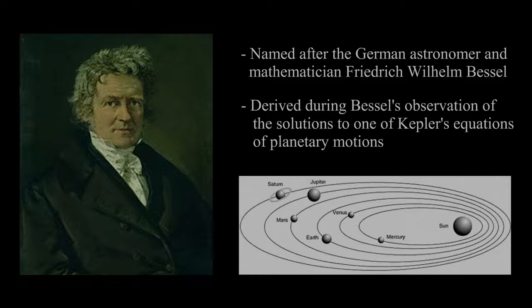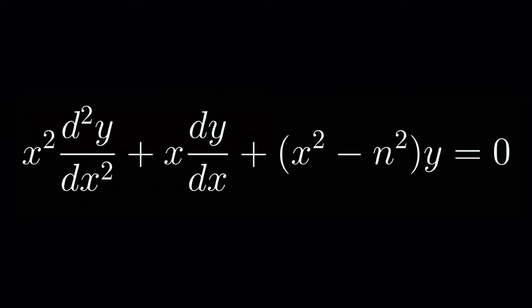The equation is x squared y double prime plus xy prime plus x squared minus n squared times y. This is a linear second-order ordinary differential equation. The solution of this equation is dependent on whether or not the parameter n is an integer or a non-integer.